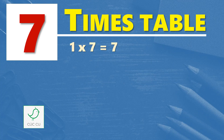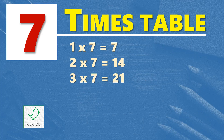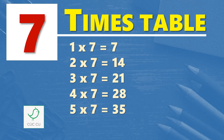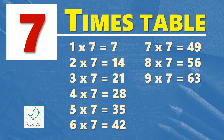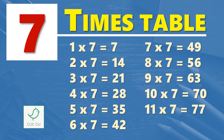Multiplication table of 7. 7 times table. 1 times 7 is 7, 2 times 7 is 14, 3 times 7 is 21, 4 times 7 is 28, 5 times 7 is 35, 6 times 7 is 42, 7 times 7 is 49, 8 times 7 is 56, 9 times 7 is 63, 10 times 7 is 70, 11 times 7 is 77, 12 times 7 is 84.